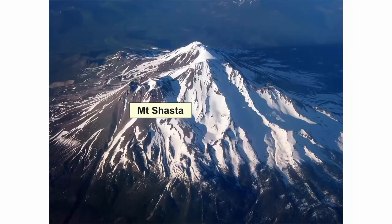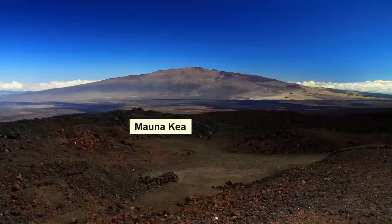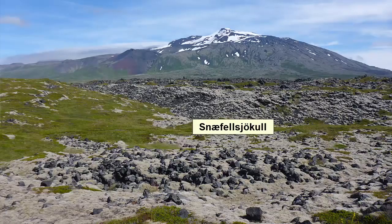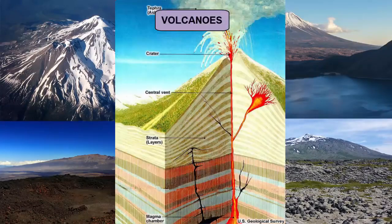Mount Shasta in Northern California, Mount Fuji in Japan, Mauna Kea in Hawaii, and Snæfellsjökull in Iceland — what type of mountains are all these? Volcanic. When magmas erupt on Earth's surface they can produce layers of lavas, ash, or cinders that pile up above the surrounding land. We call these taller landforms volcanoes, volcanic domes, or cones.